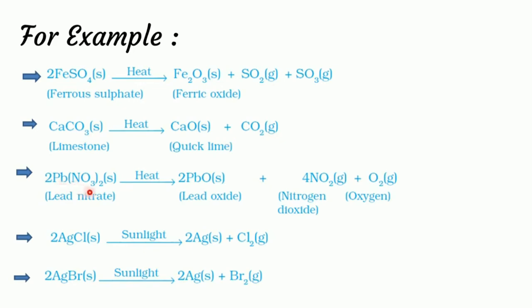Pb(NO3)2 breaks down into PbO plus NO2 plus O2. AgCl breaks down into Ag plus Cl2. AgBr breaks down into Ag plus Br2. These are all examples of decomposition reactions where a single reactant breaks down to simpler products.